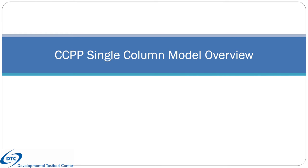This video is intended to provide an overview of the CCPP single column model. It will cover topics such as the purpose of a single column model, how the CCPP single column model operates, the capabilities of the release code, overviews of the included cases, how it is tied to the UFS, and planned improvements.